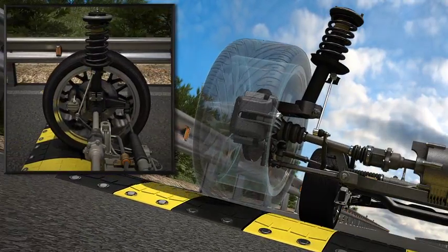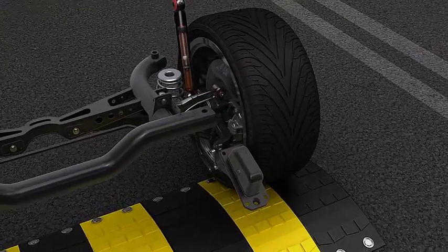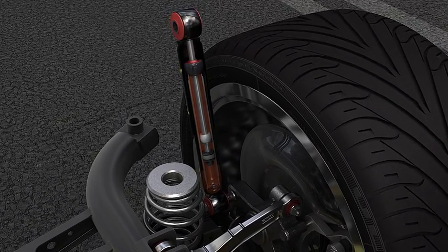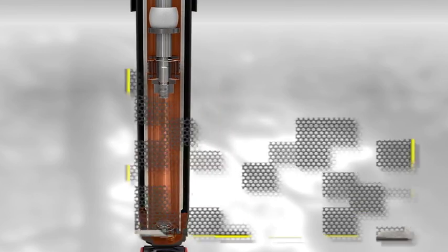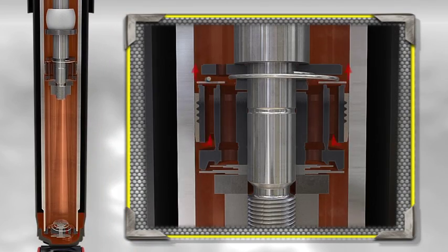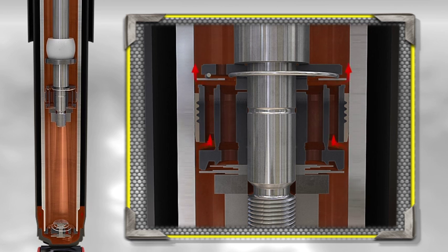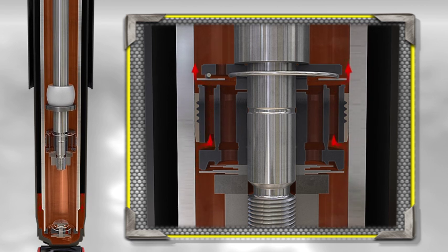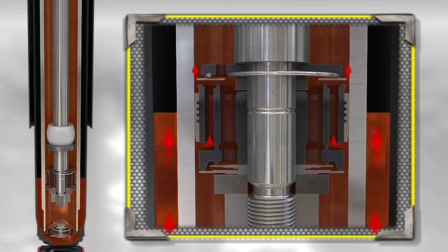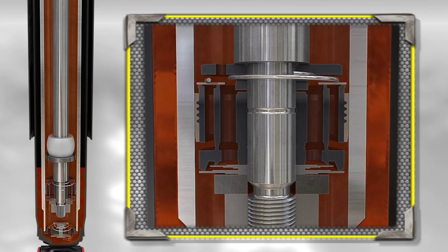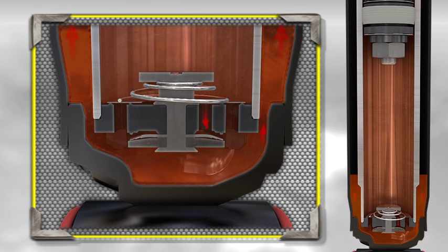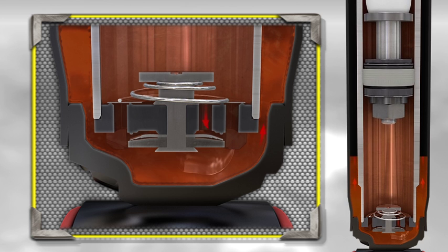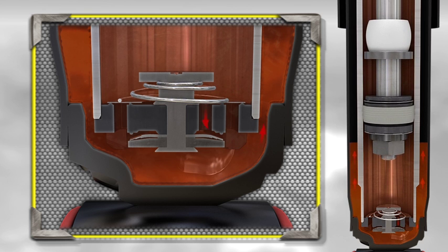When the shock absorber compresses due to uneven ground, the rod enters the pressure tube increasing the pressure of the oil contained internally. During this so-called compression phase, the compression valve controls the resistance of the damper movement while oil flows almost freely from the bottom of the pressure tube to the top through the piston valve. Increased oil pressure in the working chamber causes the compression valve to progressively open and the excess oil to flow into the reserve tube in a controlled manner.